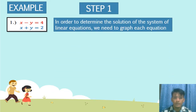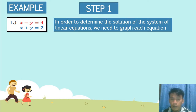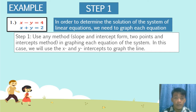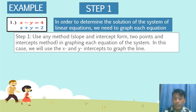Step one: In order to determine the solution of the system of linear equations, we need to graph each equation. Before we graph, we need to solve equations 1 and 2. Use any method — slope-intercept form, two points, or the intercepts method. In this case, we will use the x and y intercepts to graph the line.